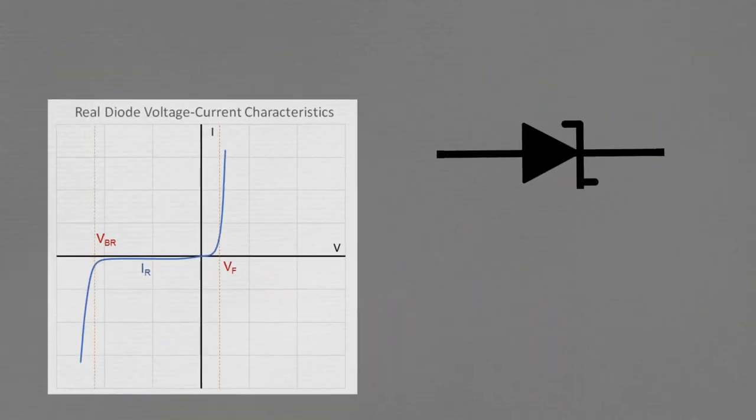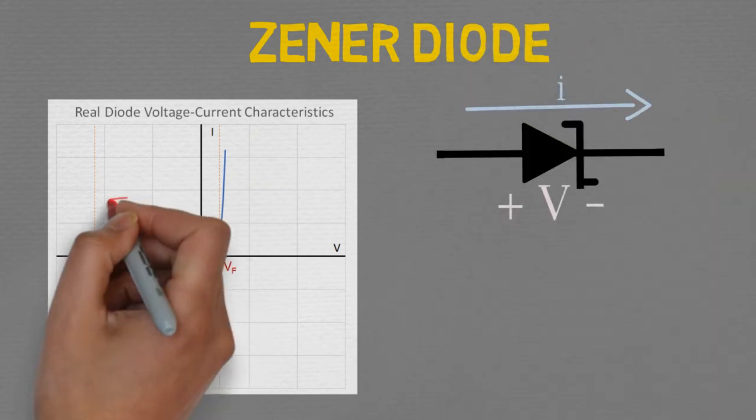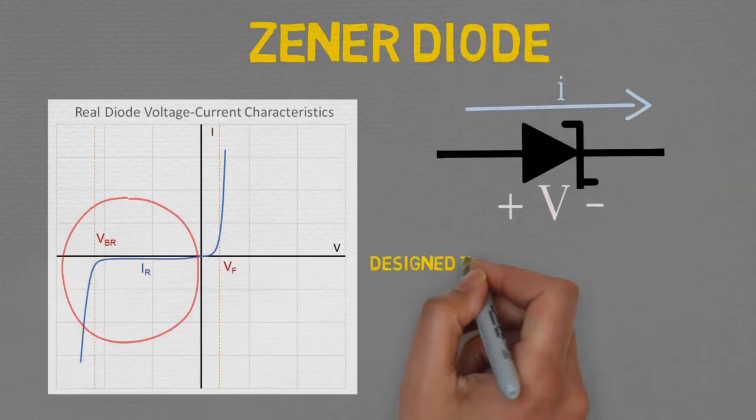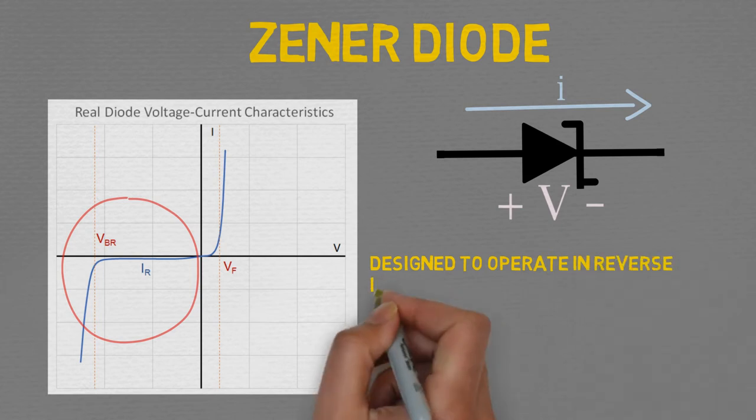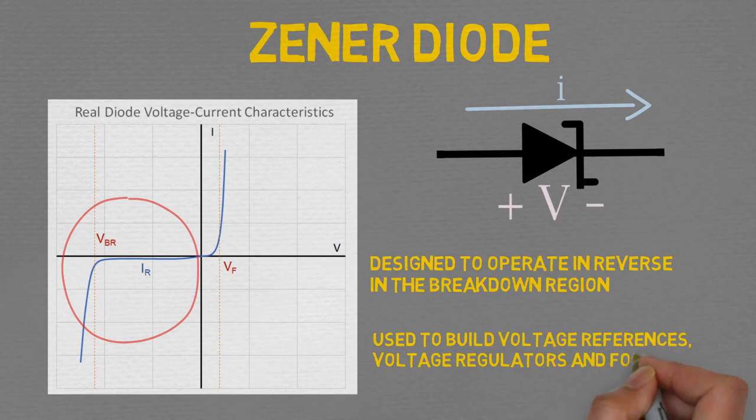This is the symbol for the specialized diode, the Zener diode. Zeners are designed to operate reverse biased in the breakdown region. Their breakdown voltage remains relatively constant over a range of currents, making them useful for building voltage references, low power voltage regulators, and circuit protection.